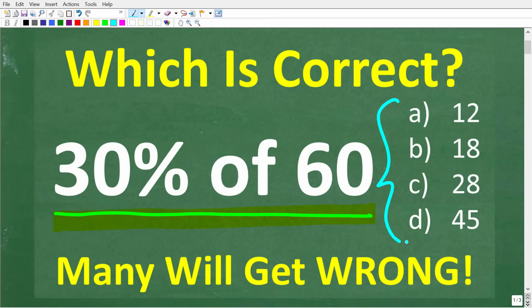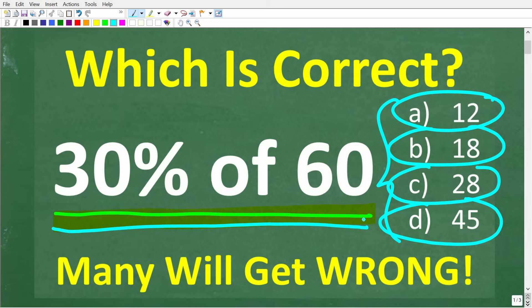Now we do have a multiple choice question, and let's take a look at our answers. So A is 12, B is 18, C is 28, and D is 45. All right, so once again, no calculators, but if you think you know the answer, put that into the comment section. I'm going to show you the correct answer in just one second. Then of course, I'm going to show you exactly how to solve this problem without using a calculator.